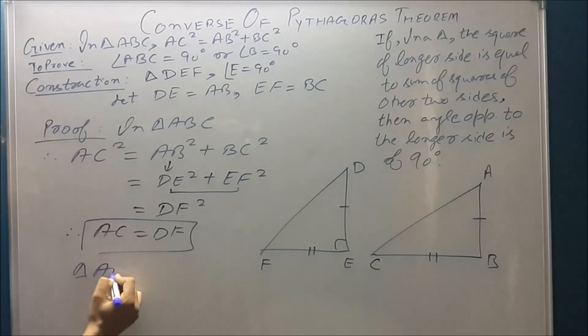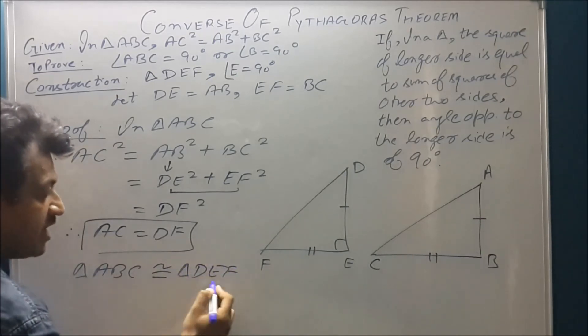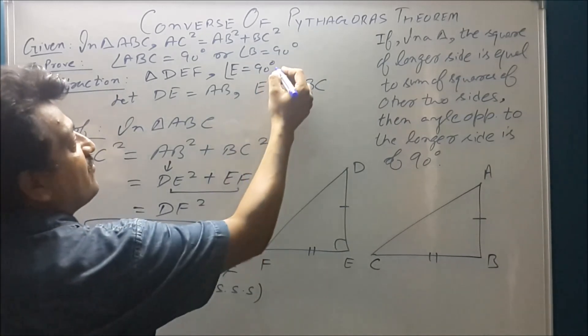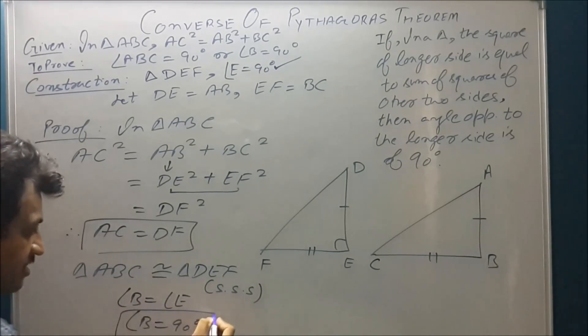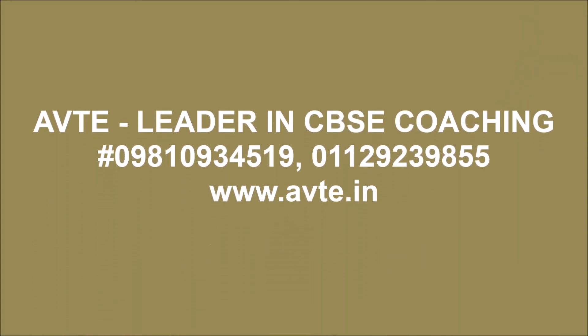So triangle ABC is congruent to triangle DEF by SSS congruency rule. So with the help of CPCTC, corresponding parts of congruent triangles are congruent, we can say that angle B is equal to angle E. And we know that angle E is of 90 degrees, so we can say angle B is also 90 degrees. Thank you.